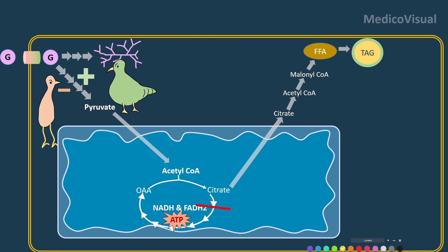utilize glucose, we cannot store glucose, we cannot convert glucose into fats — we need the glucose for the brain, otherwise coma may ensue, and other problems, even death, may occur due to severe hypoglycemia.